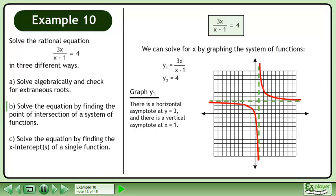Graph Y1, there is a horizontal asymptote at y equals 3 and there is a vertical asymptote at x equals 1. Now graph Y2, this is the horizontal line y equals 4.